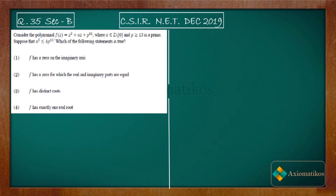Consider the polynomial — we have a degree-two polynomial. In this polynomial, 'a' is given as a non-zero integer and p is a prime number greater than 13. Suppose that a² ≤ 4p¹¹. Which of the following statements is true? So this is what is given to you — now let us proceed.